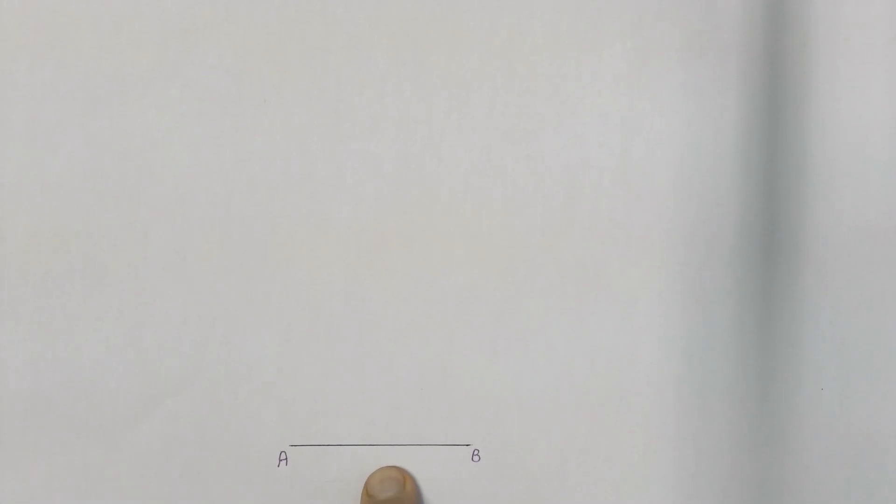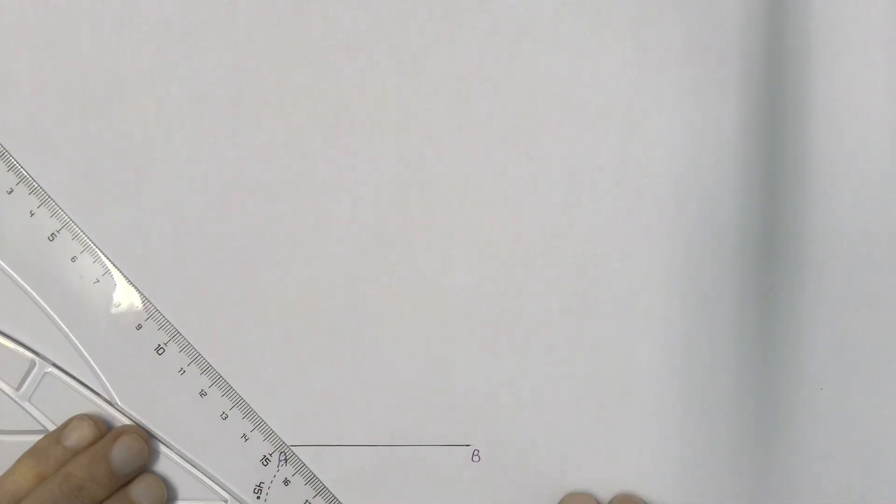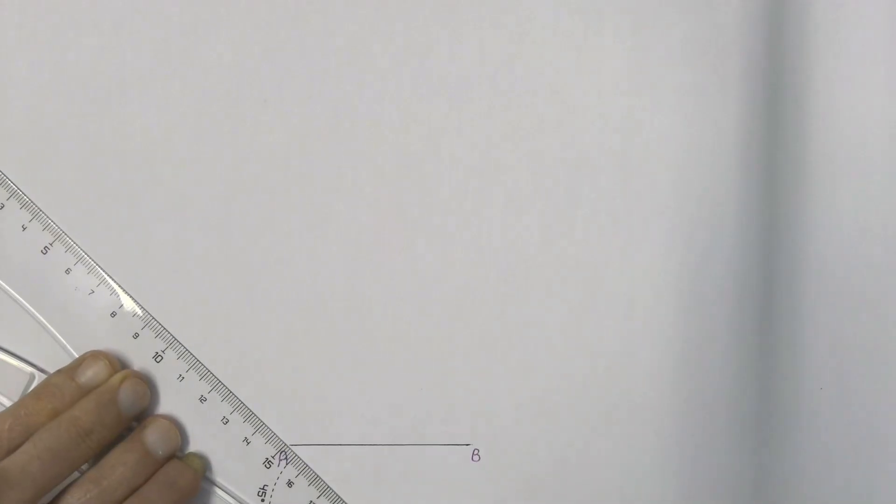Using line segment AB, we are going to construct an octagon with all of its sides the same length. To construct an octagon, we have to use a 45-degree set square because the angle of an octagon's sides are at 45 degrees. Starting on our baseline, we are going to take our 45-degree set square.